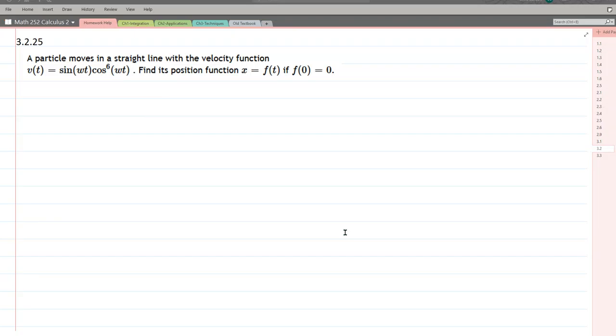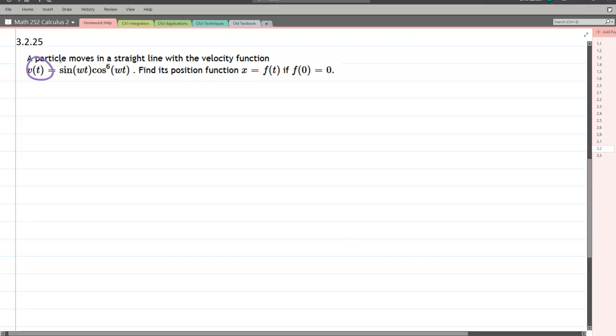We have a physics problem here. We're given a velocity and we want to know its position. So we need to find the anti-derivative of velocity. Now we want the position function right here, and we're given one initial condition. So we're gonna integrate our velocity.